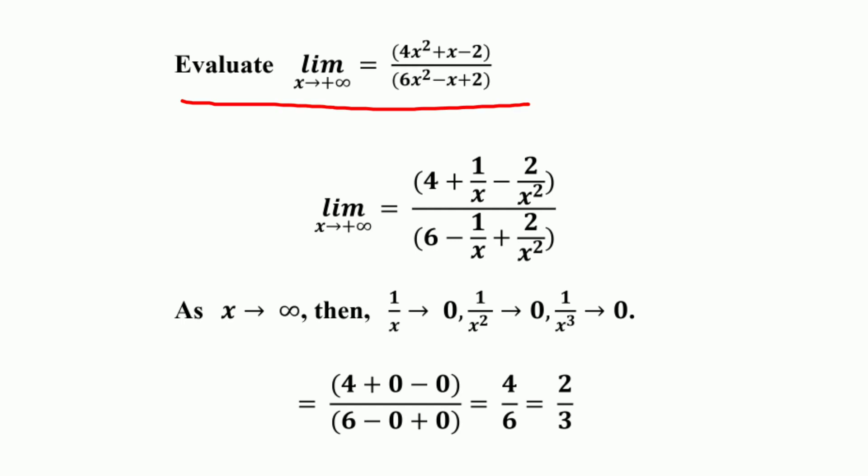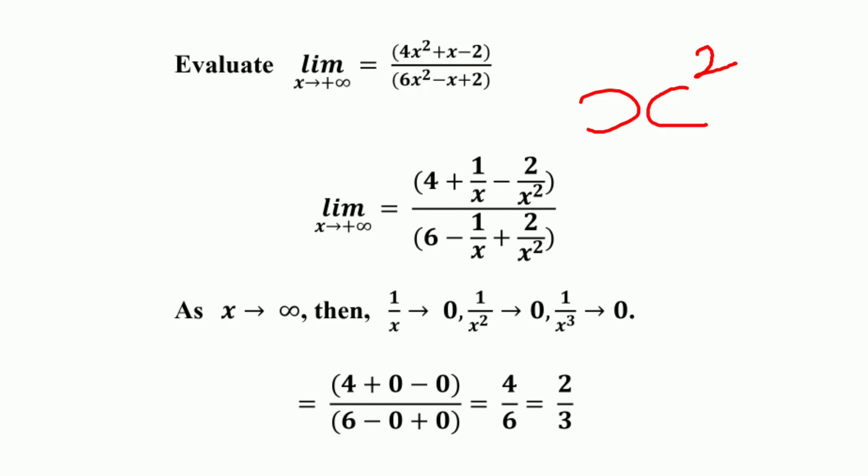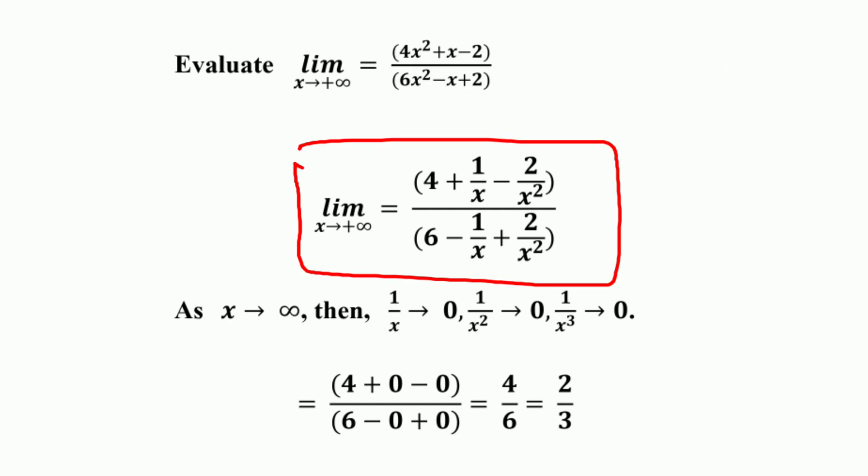Another example: evaluate the limit of (4x² + x - 2) / (6x² - x + 2) as x approaches positive infinity. In questions involving infinite limits, we first divide the numerator and denominator by the highest power of x and then evaluate the function. The highest power of x here is x². Dividing both numerator and denominator by x², we get 4x²/x² = 4, then (1/x - 2/x²) in the numerator, divided by 6x²/x² = 6 and (-1/x + 2/x²) in the denominator.